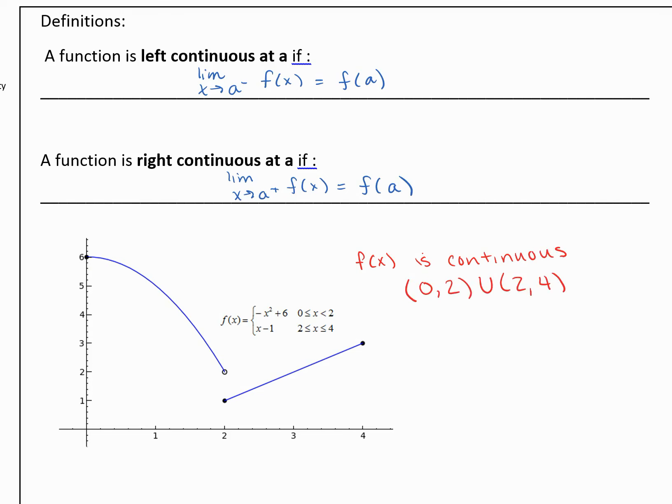Now we can't include the endpoints because for this left-hand endpoint we don't have a left-handed limit, and for this right-hand endpoint we don't have a right-handed limit, and at 2 we have a jump discontinuity.